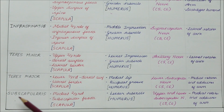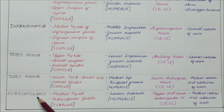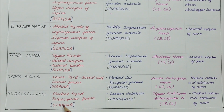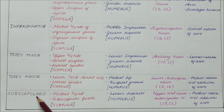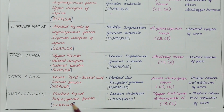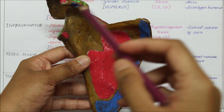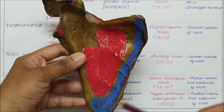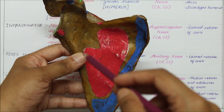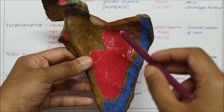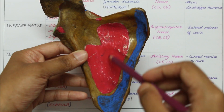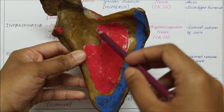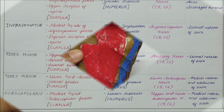Finally, we have the subscapularis muscle, which originates from the medial two-thirds of the subscapular fossa of the scapula. This is easy to remember as the subscapularis and the subscapular fossa are both related terms. This is the anterior aspect of the scapula — this is the subscapular fossa — and the subscapularis muscle arises from the medial two-thirds of the subscapular fossa right here.